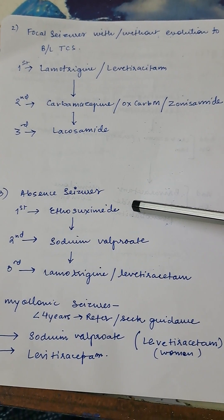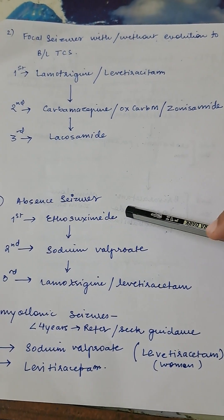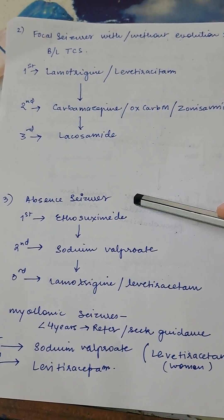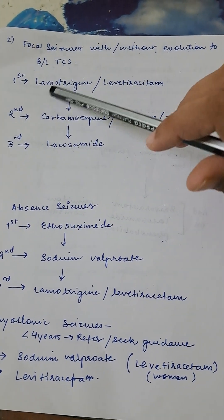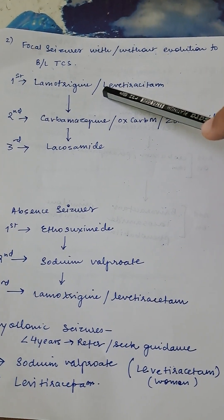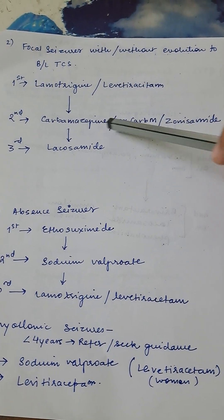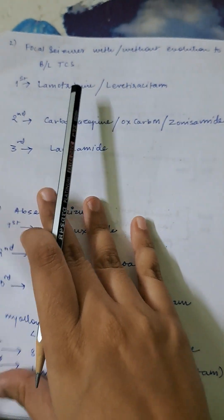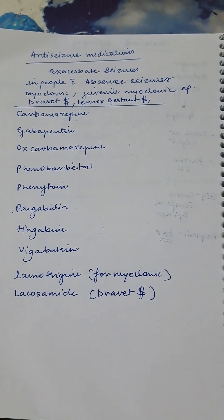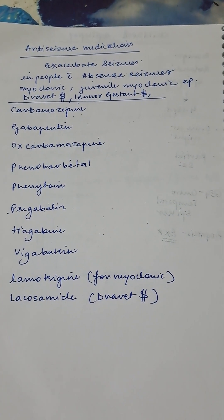Important, very important, are absence seizures. First line is ethosuximide. This is a change both in adults and pediatrics. This is a drug of choice and the first line. Focal seizure: you don't add sodium valproate in any case. First is lamotrigine or levetiracetam, carbamazepine, oxcarbazepine, zonisamide, and lacosamide. So that's it, I will leave you with this slide.